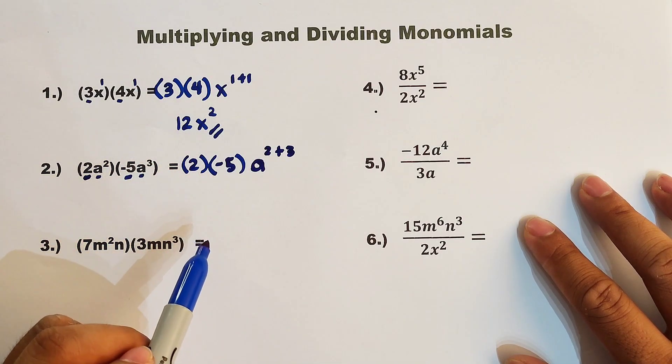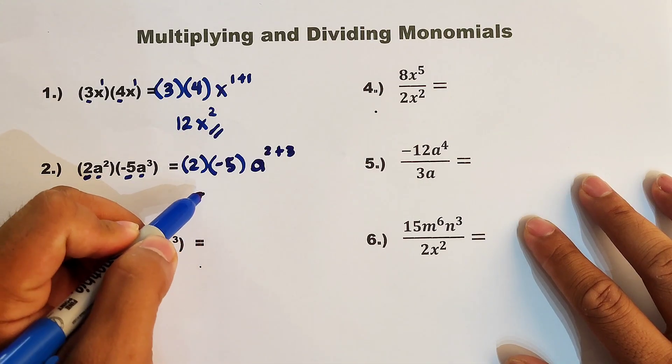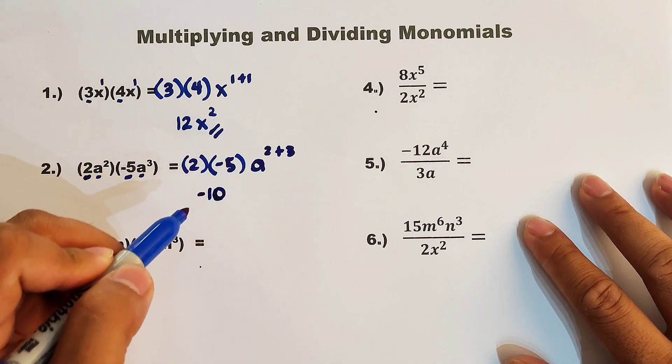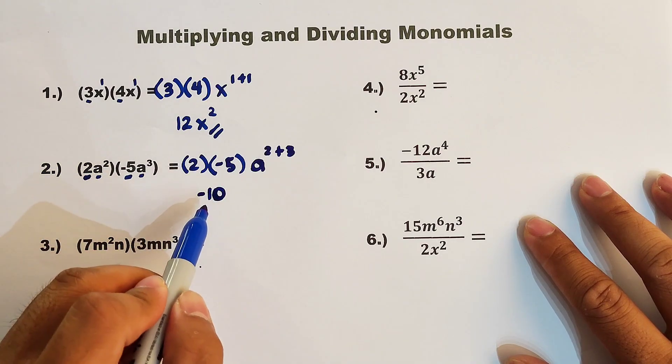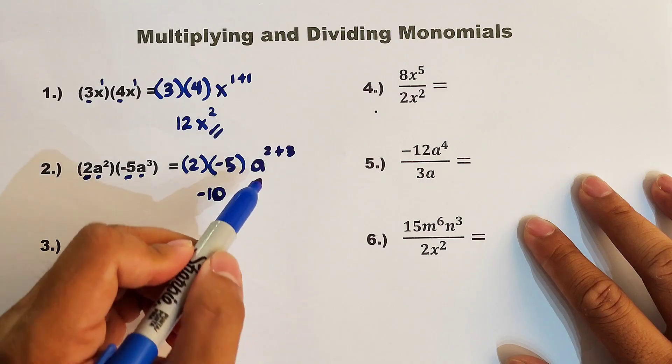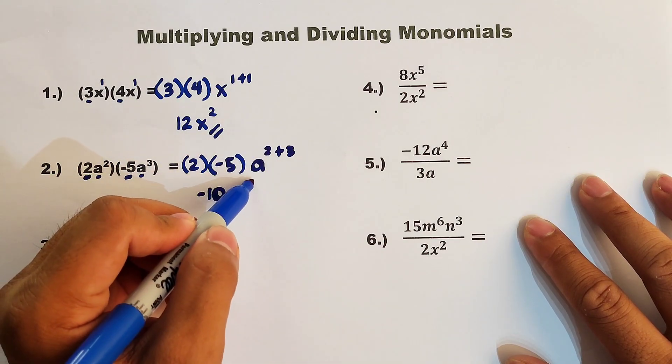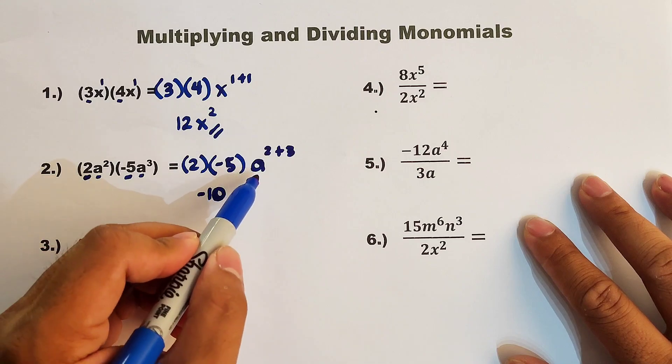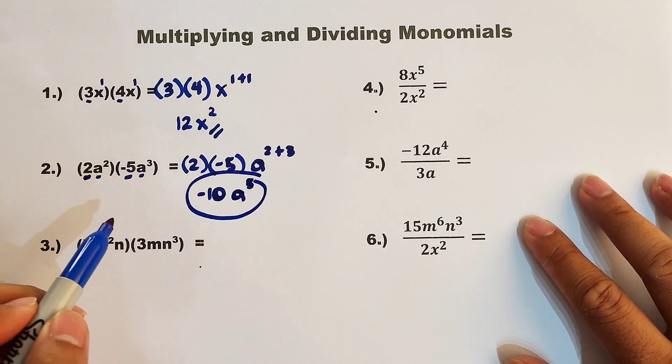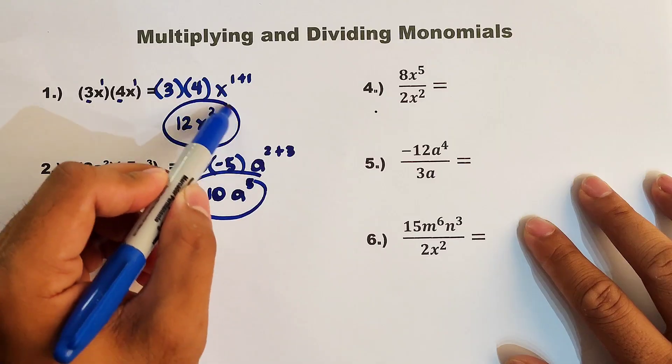And then we can simplify. 2 times negative 5, since the numbers have different signs, the answer must be negative. So that is negative 10. Then copy your variable a, then add exponents, that would be to the 5th power. So the correct answer is negative 10a raised to the 5th power.